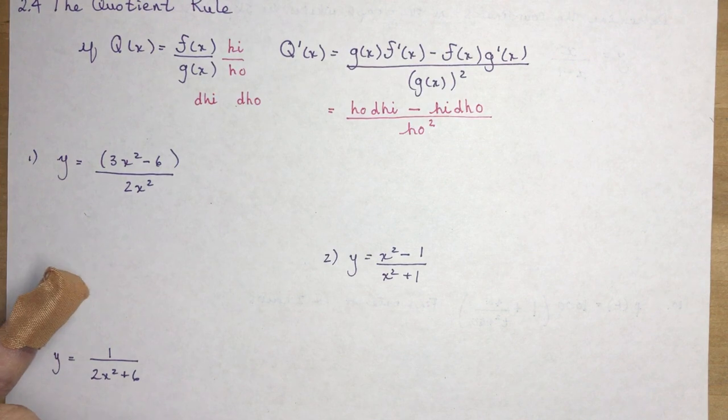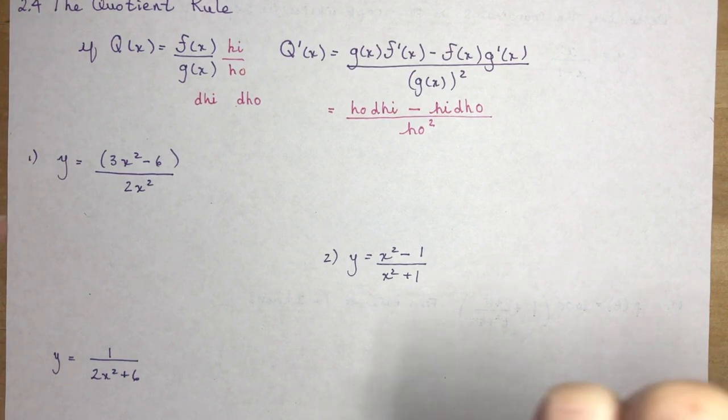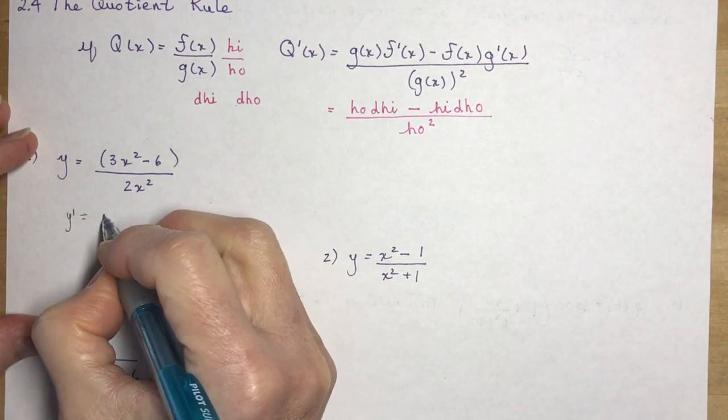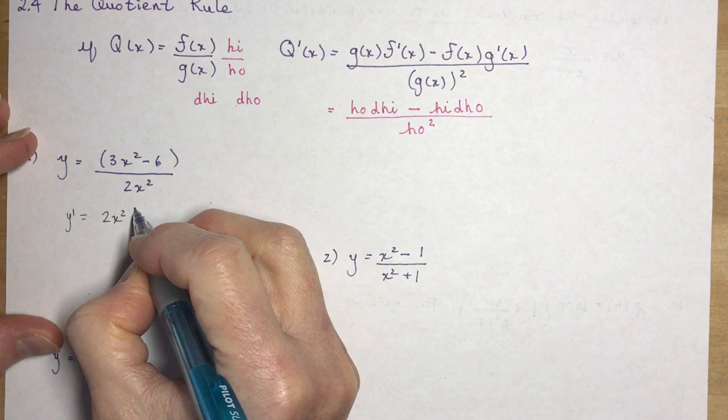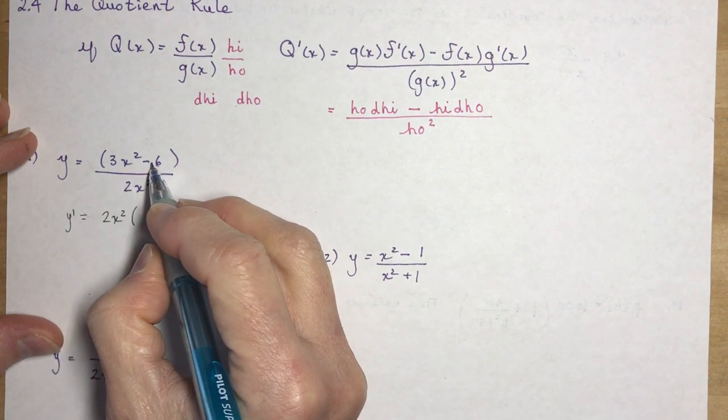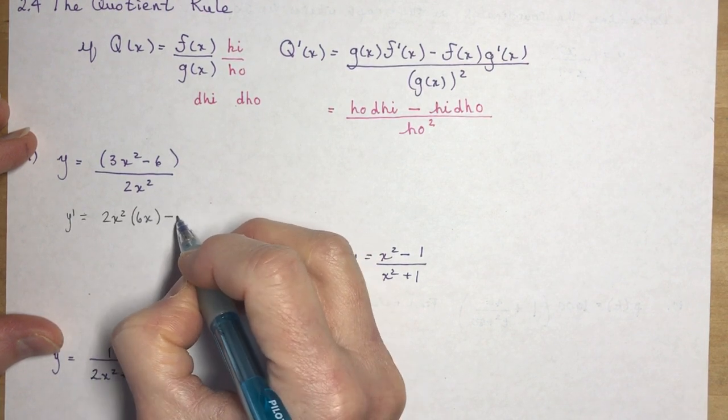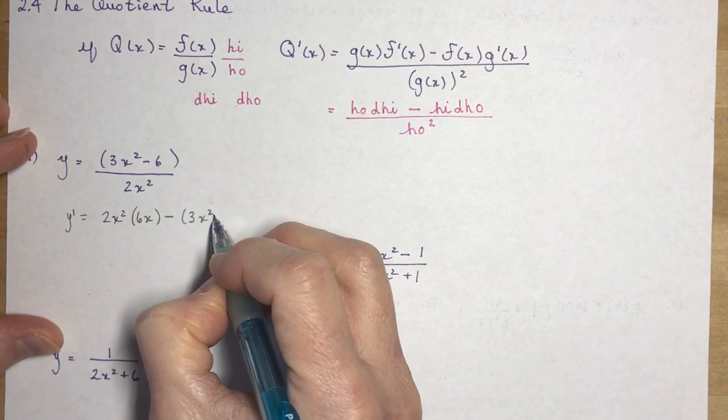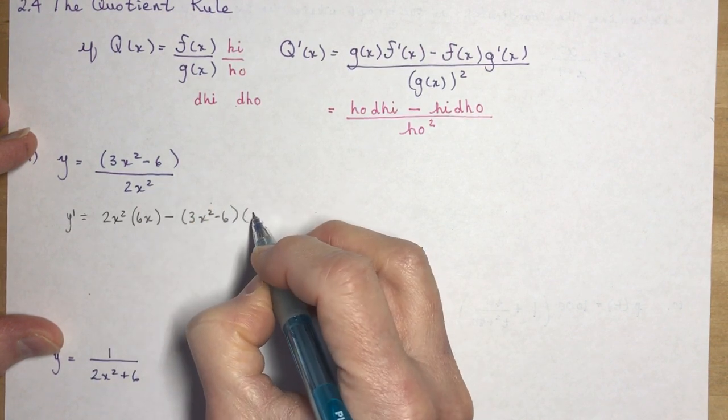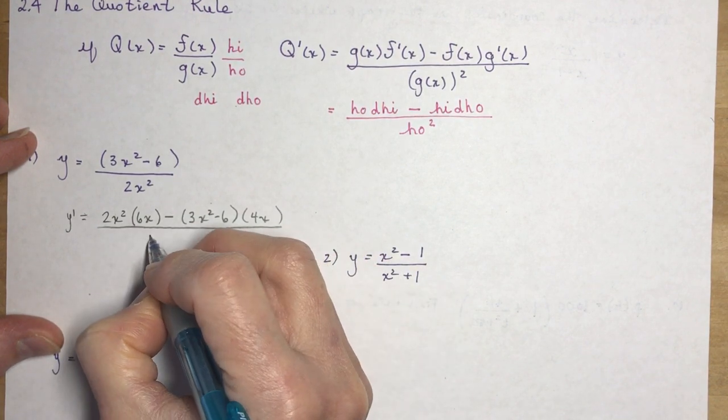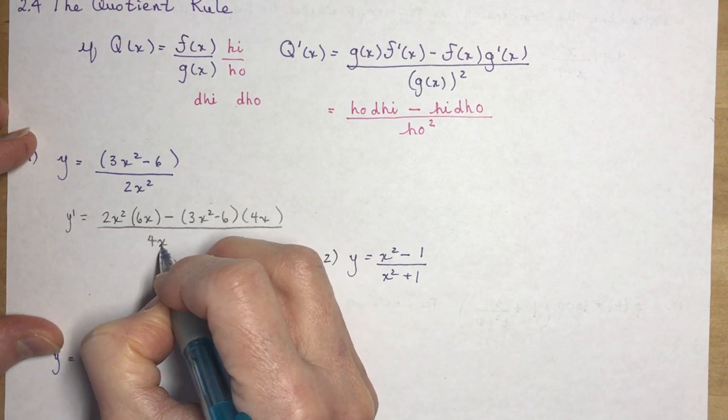Watch how easy that's going to be when I do this. For y = (3x² - 6)/(2x²), y prime: Ho - what's ho? 2x squared. D-hi - derivative of the top, that would be 6x. Ho d-hi minus high - when I say high, you write it all out - d-ho, 4x, over ho squared, 4x to the fourth.